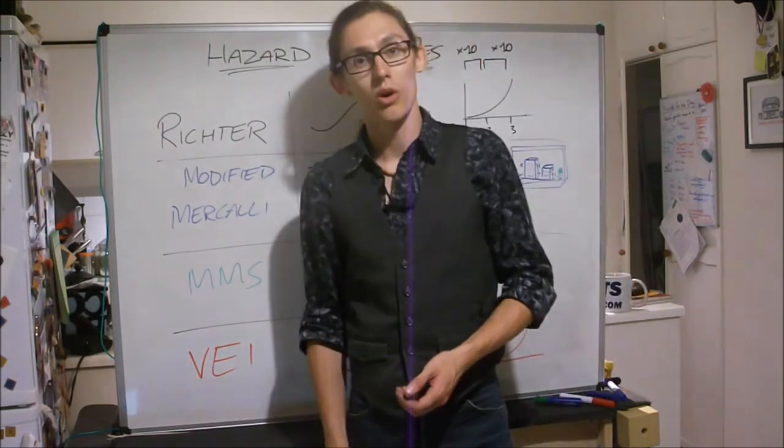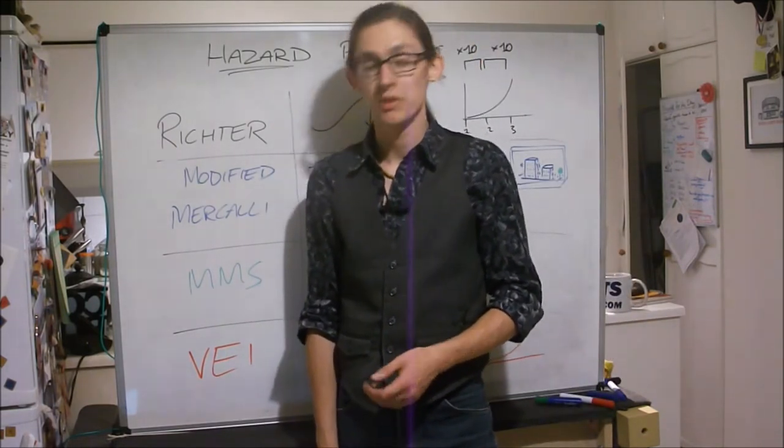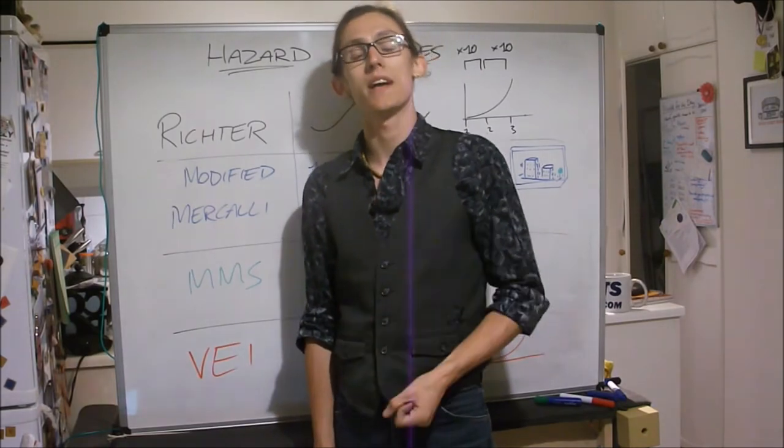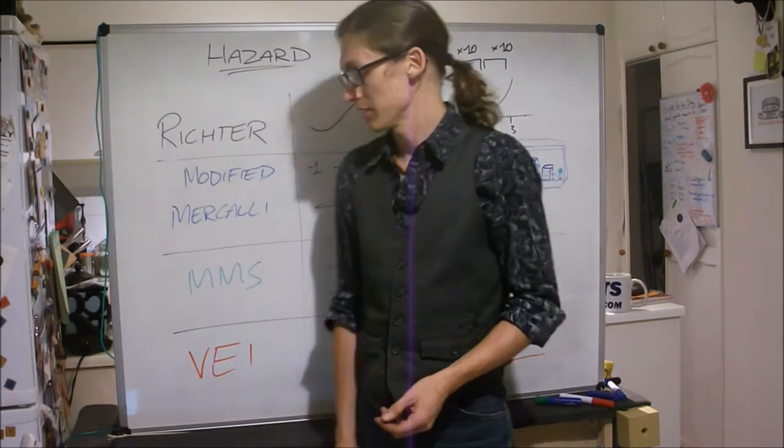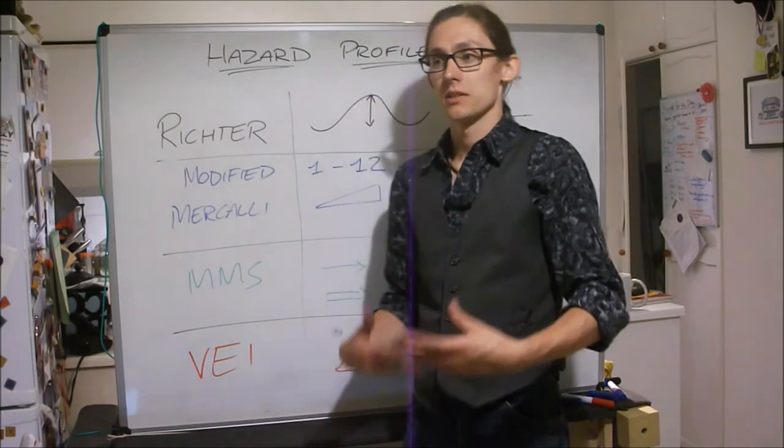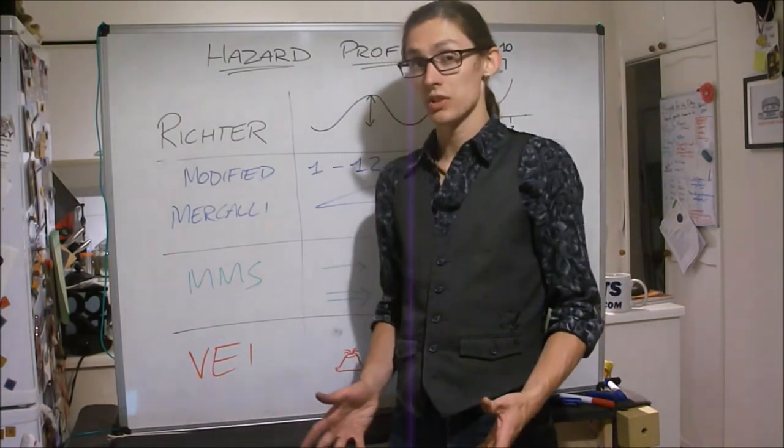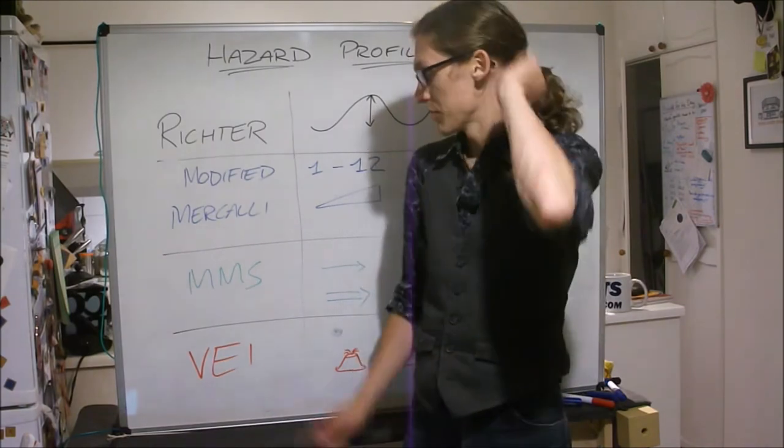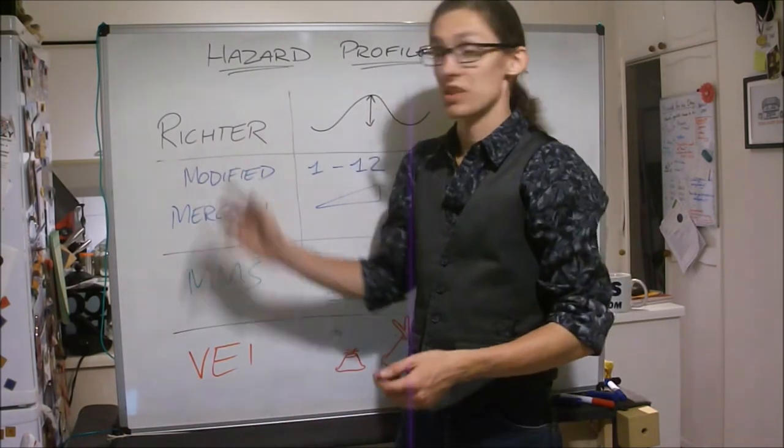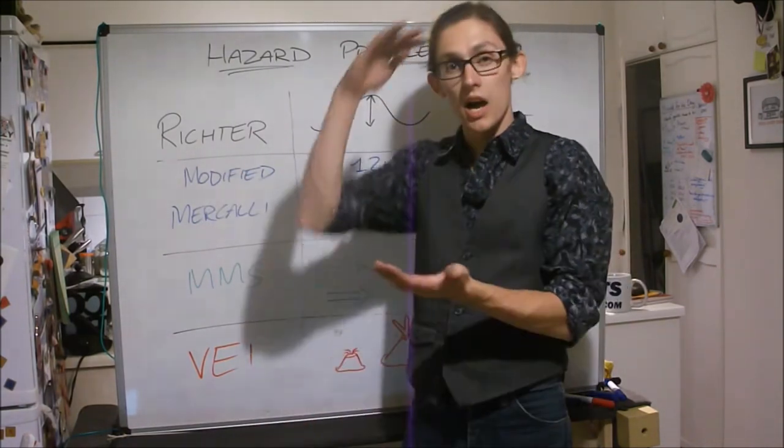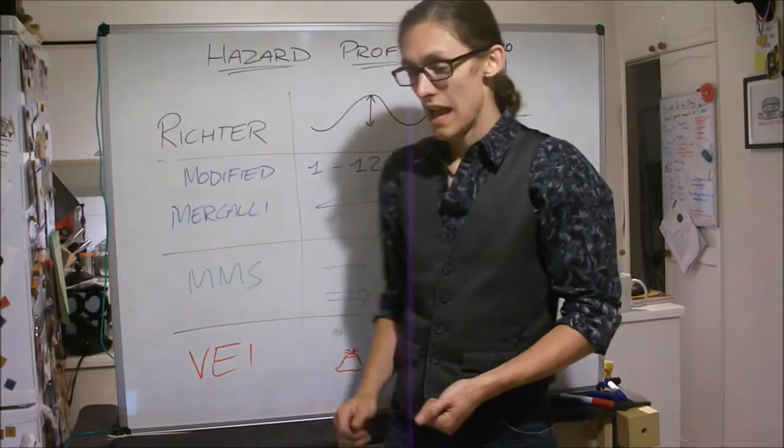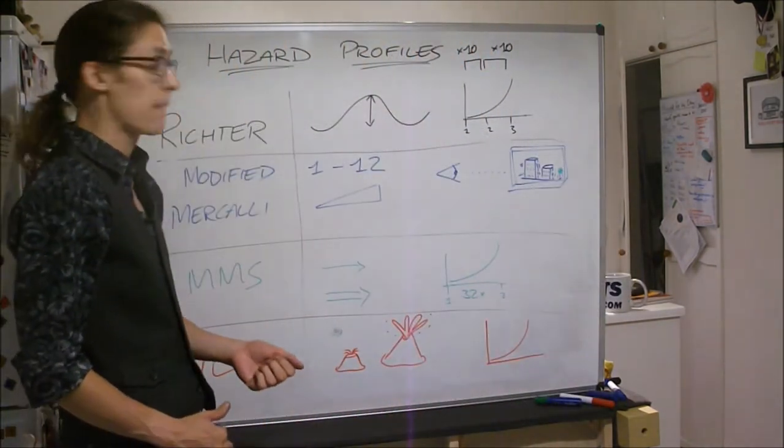The MMS or moment magnitude scale is the one that tends to be used by the USGS. It's a very modern scale and it's like the new version of the Richter scale. Both are still used, the Richter is still used, but the Richter, which was developed in the 1930s, measures the height of waves.